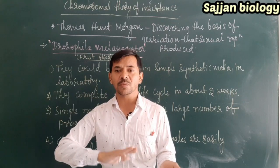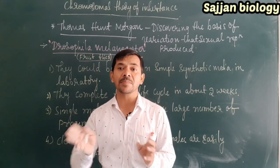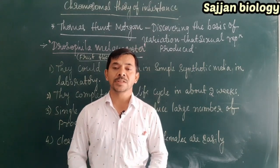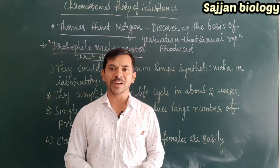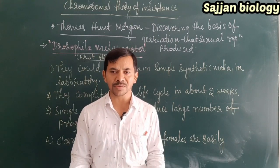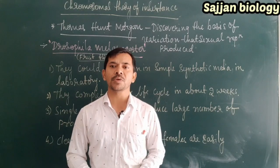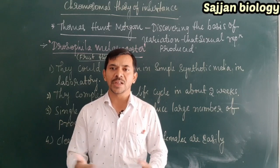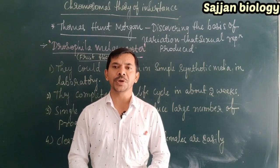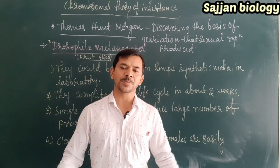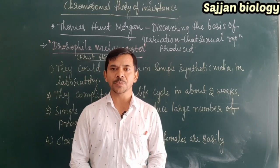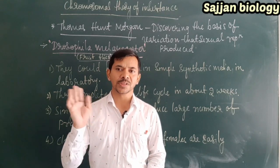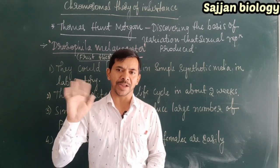Thomas Hunt Morgan identified what kind of variations can be seen through the reproduction process. This is what the chromosomal theory of inheritance is about. If you have any doubts, please drop your comments in the comment section and I will reply. If you like this video, please share it with your friends and spread the knowledge. Always remember: study for knowledge, not for marks. Take care and bye.